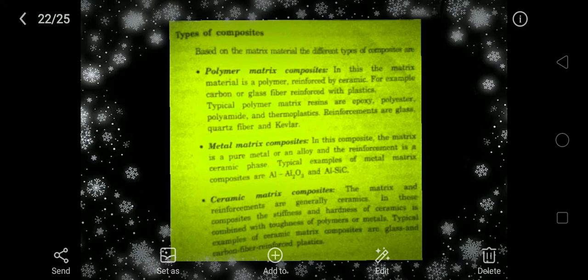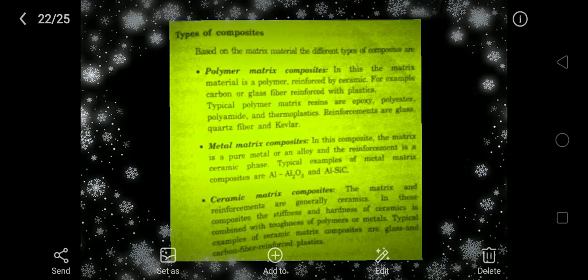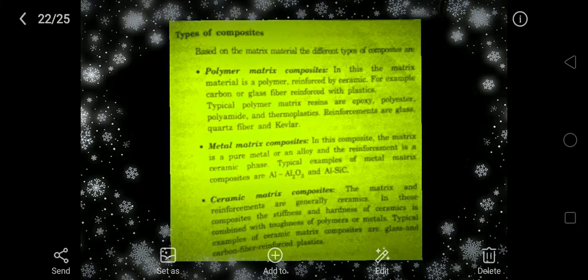Composite types may be polymer matrix composite, metal matrix composite, or ceramic matrix composite. Polymer matrix resins include epoxy and polyester, with reinforcements such as glass, quartz fiber, and Kevlar (aramid). Metal matrix composites include materials like Al, Al₂O₃, and AlSiC. Ceramic matrix composites include glass and carbon fiber reinforced plastics.